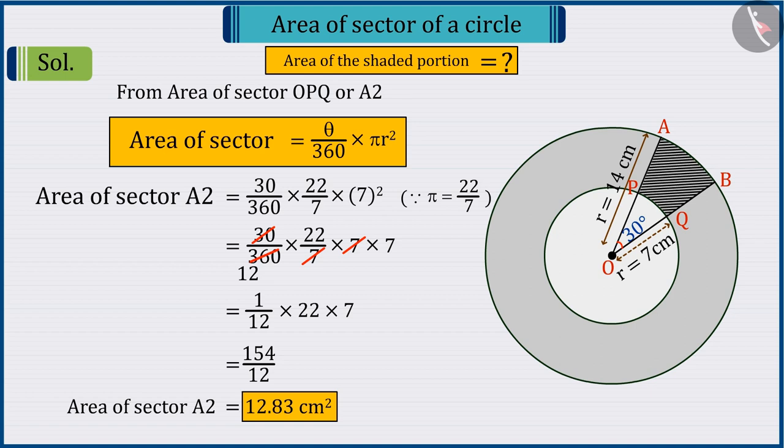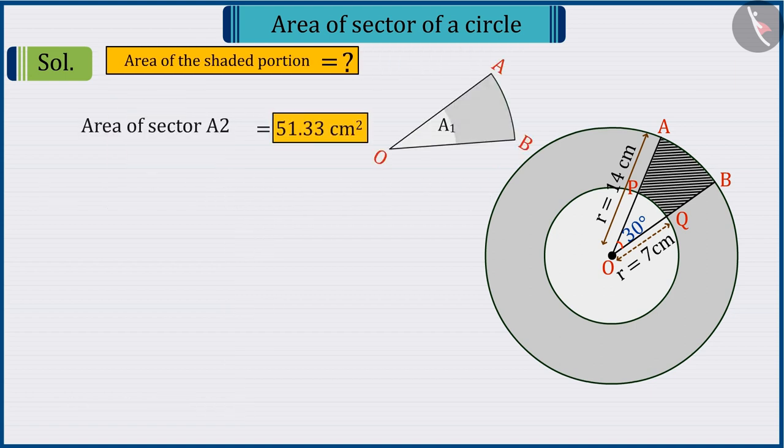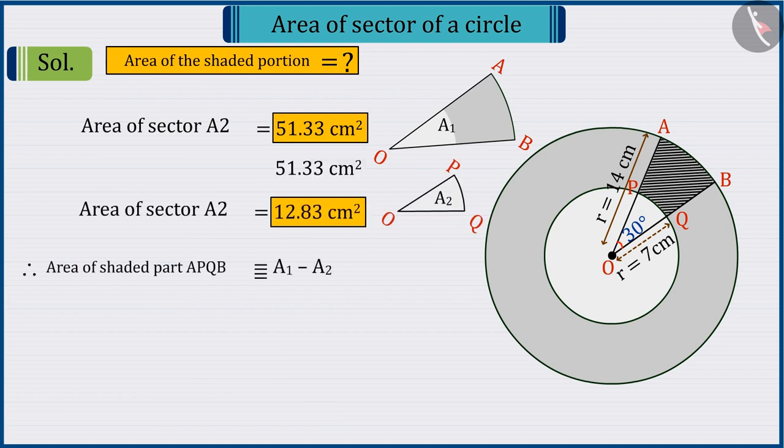Since we have to find the area of the shaded region, so, we subtract the area of A2 from the area of A1, thereby giving the area of the shaded area 38.5 square centimetres.